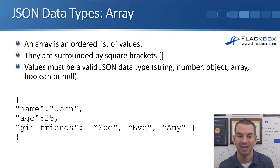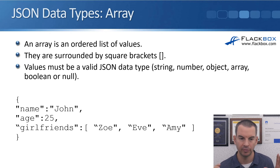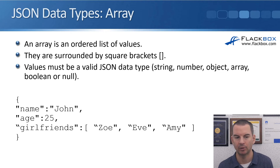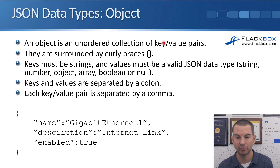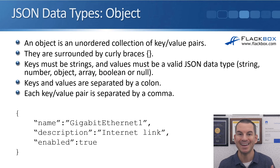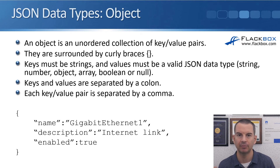Where an object is an unordered list, an array is an ordered list of values. Where an object is surrounded by curly brackets, the array is surrounded by square brackets — that's how you can tell them apart. Values in an array must be a valid JSON data type. The value for an array could be another array or an object. We can nest our values — we can have objects within objects, arrays within arrays, and we can have them within each other as well.